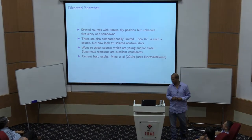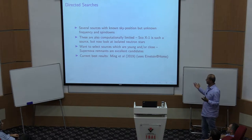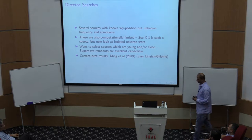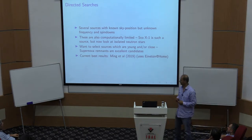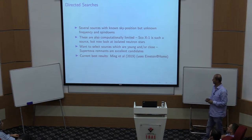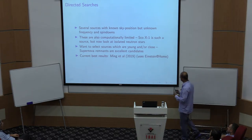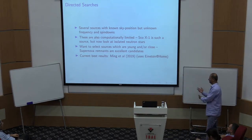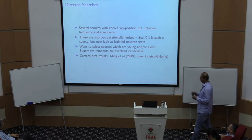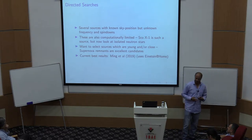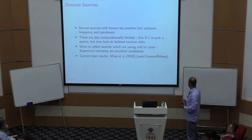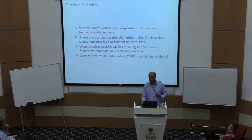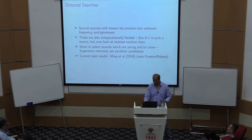Just like Scorpius X1, these are searches with known sky positions but unknown frequencies and spin-downs. You can also look at neutron stars that are not in binaries, just the places where we expect neutron stars to be. Excellent candidates are supernova remnants. We want to select sources that are either young, very close, or — even better — both young and close. From the catalog of supernova remnants, three candidates are particularly interesting.